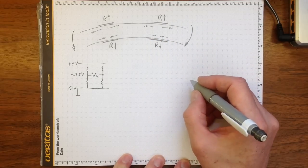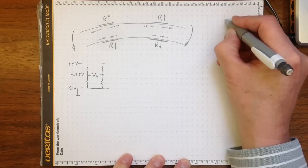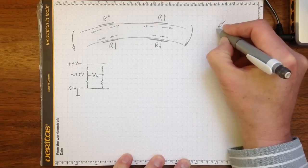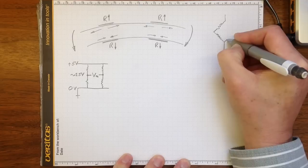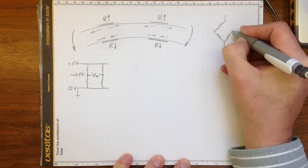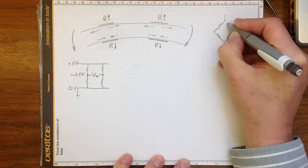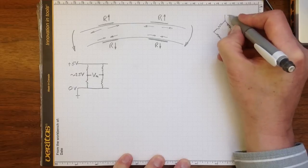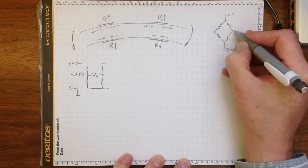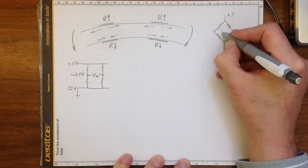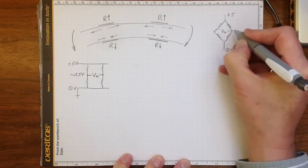This is usually done with a Wheatstone bridge and the Wheatstone bridge is usually drawn in a diamond shape like this, with the resistances each on one leg of the diamond shaped bridge, plus five there, zero volts there. In here somewhere we'll have about two and a half in the middle and we'll measure the voltage across there.